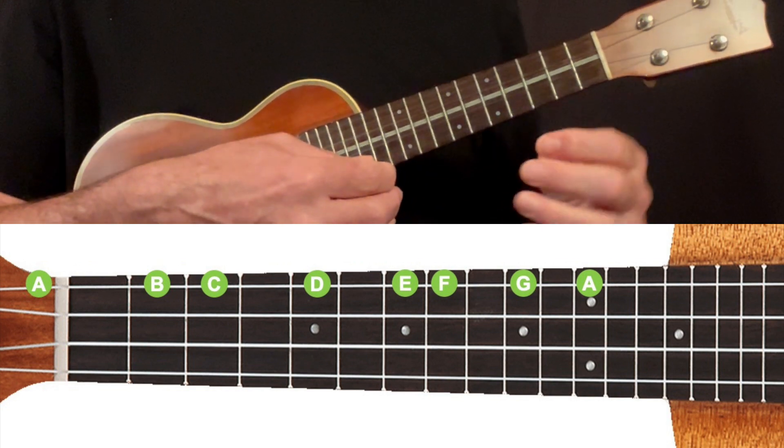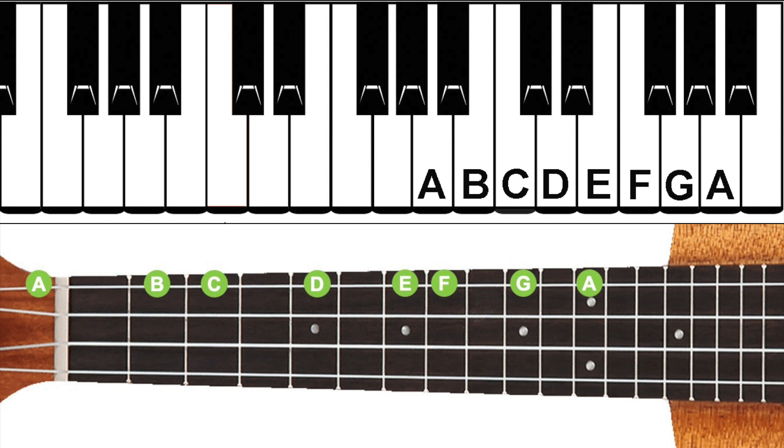So if we now reference this with the layout of a piano keyboard, you'll notice that the labeled white keys are the notes we've just played on our ukulele, and between the notes where we had an extra fret that we didn't play, you'll notice there's a black key. So between A and B there's a black key, between B and C there isn't one.